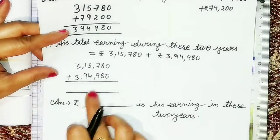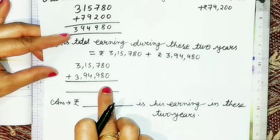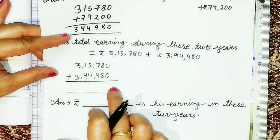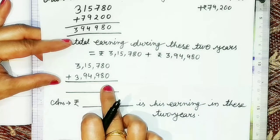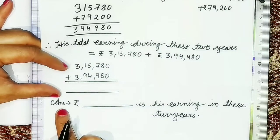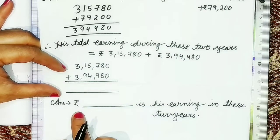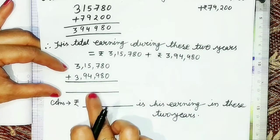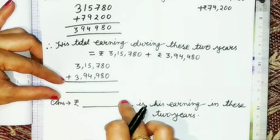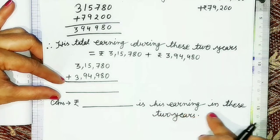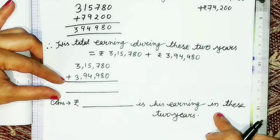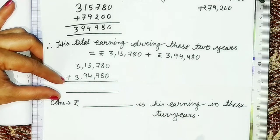After adding, children will do the calculation and write the answer. While writing the answer, first write the same number obtained after adding, and then write: is his earning in these two years.